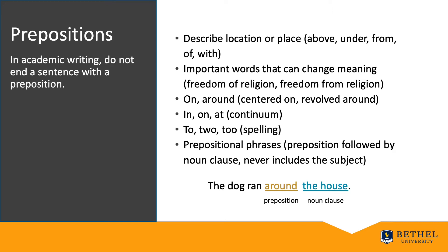Let's look at this sentence: 'The dog ran around the house.' 'Around' is the preposition and 'the house' is the noun clause. If you replaced 'around' with another word and the sentence still made sense, that word is probably a preposition — 'into the house,' 'at the house,' 'from the house,' and so on. Exceptions exist in English, particularly in pronunciation. In academic writing, do not end a sentence with a preposition. This guideline does not apply to informal writing such as magazine articles, advertisements, or social media.